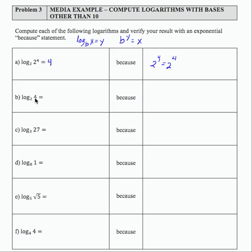Log base 2 of 4, what's the exponent on 2 that gives me 4? Well, that's 2 because this base raised to this power equals this number. So 2 squared equals 4.